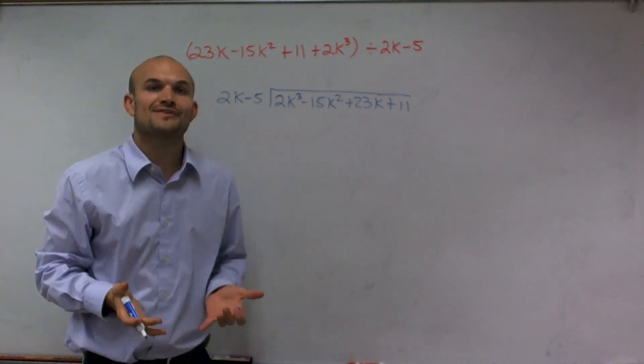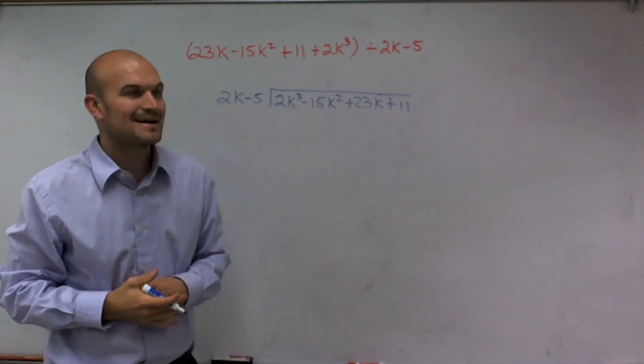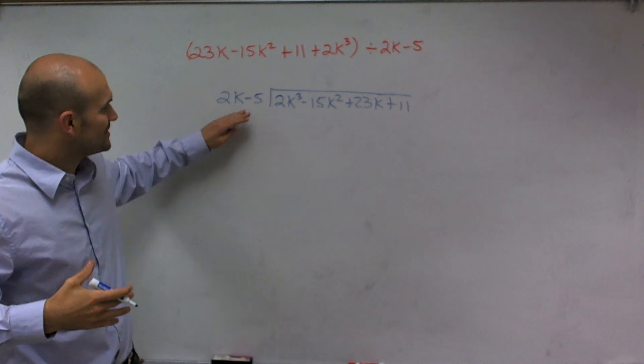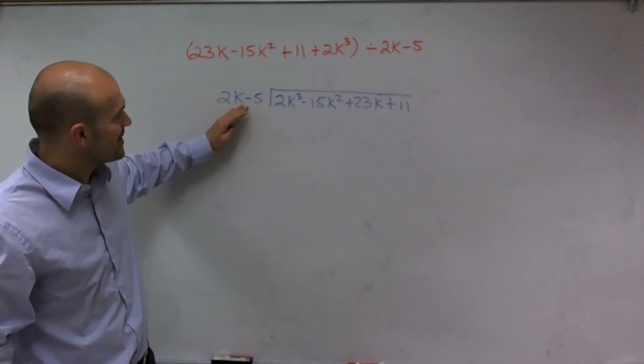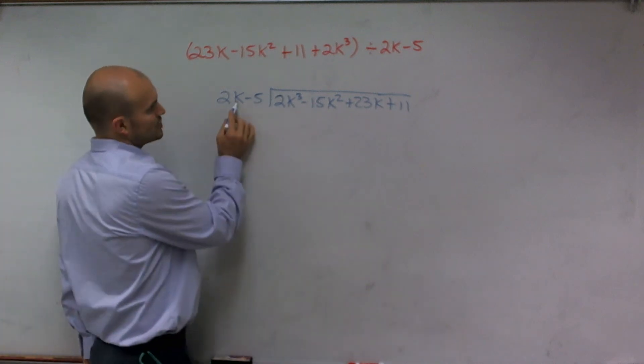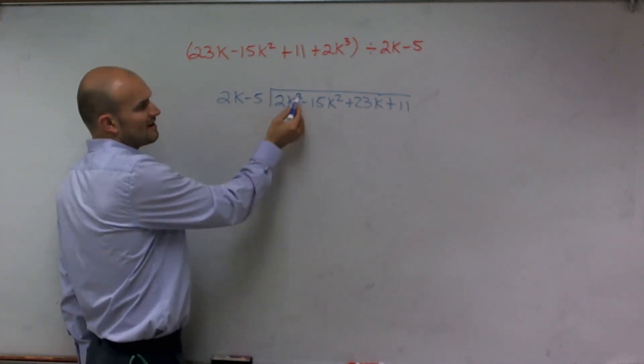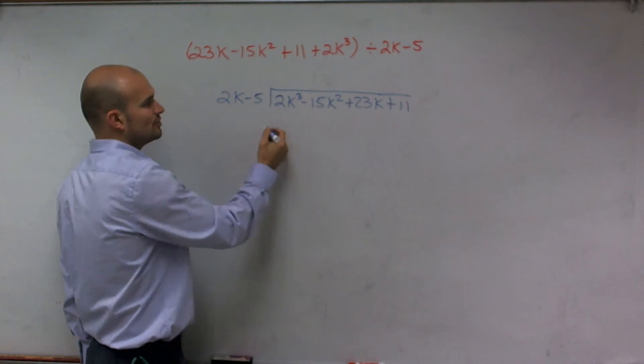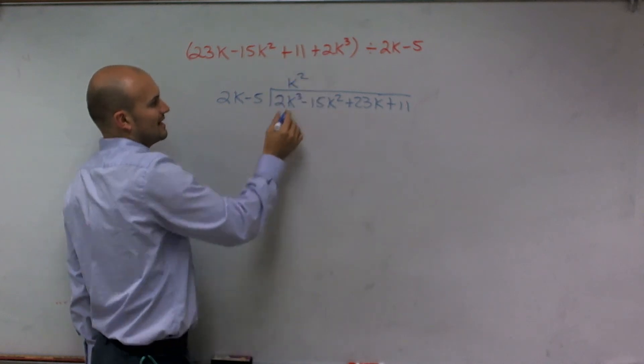So now we're going to do long division, just like we did a long time ago. We're going to divide this binomial into each binomial. And the way to do this is we're just going to work on this step by step. So I'm going to say 2k, how many times does 2k divide into k cubed? And you could say it's going to be k squared.